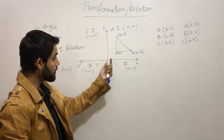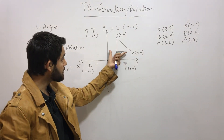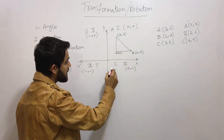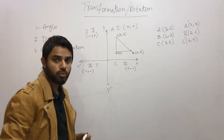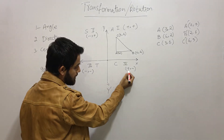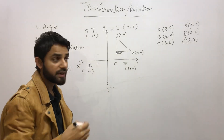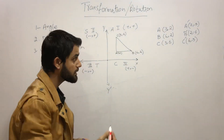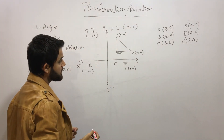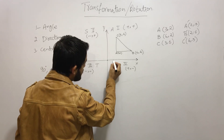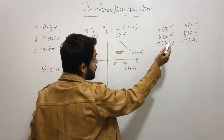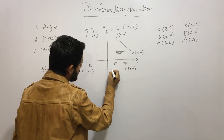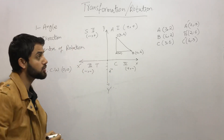Our original position is in the first quadrant. Rotating clockwise moves us into the fourth quadrant, where X is positive and Y is negative. So write a minus sign on all the Y values. The first point A prime is (2, -3): on the X-axis it's 2, and on the Y-axis it's -3.